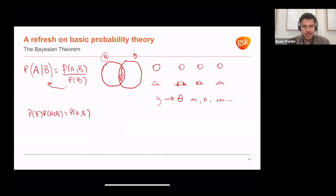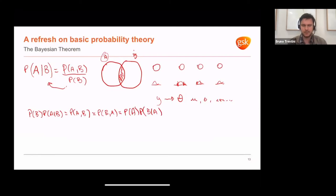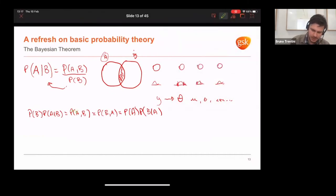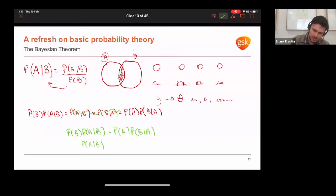Going into the basics of probability for a quick refresher: the probability of A given B equals the probability of A and B divided by the probability of event B. If we have two events A and B with an area of overlap, we want to calculate the probability of A happening given B without counting B twice. Working through the algebra, we know that the probability of A and B equals the probability of B times the probability of A given B. Using commutative properties, we arrive at Bayes' theorem: the probability of A given B equals the probability of A times the probability of B given A, divided by the probability of B.